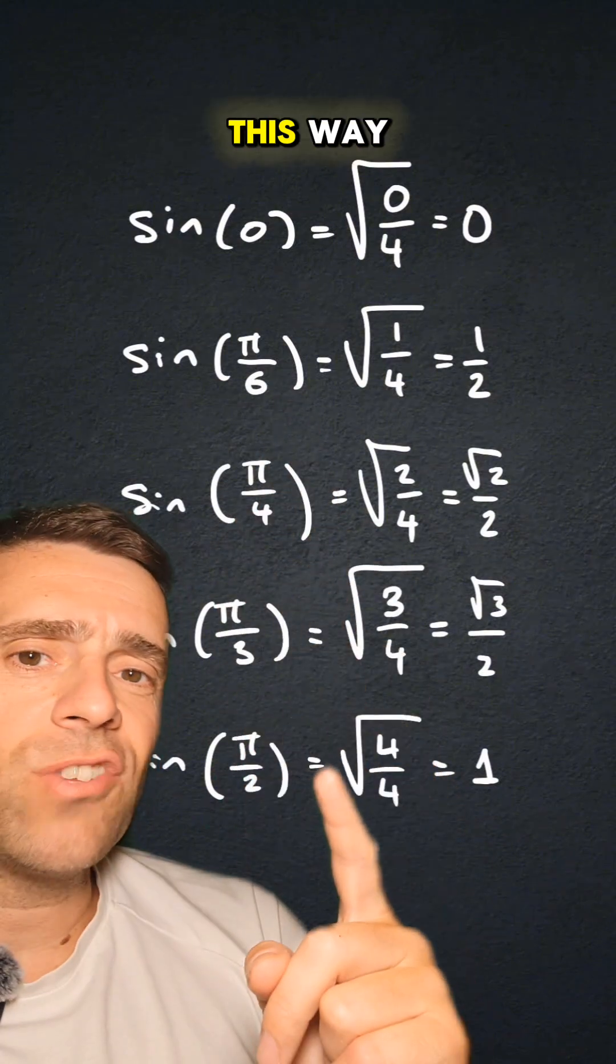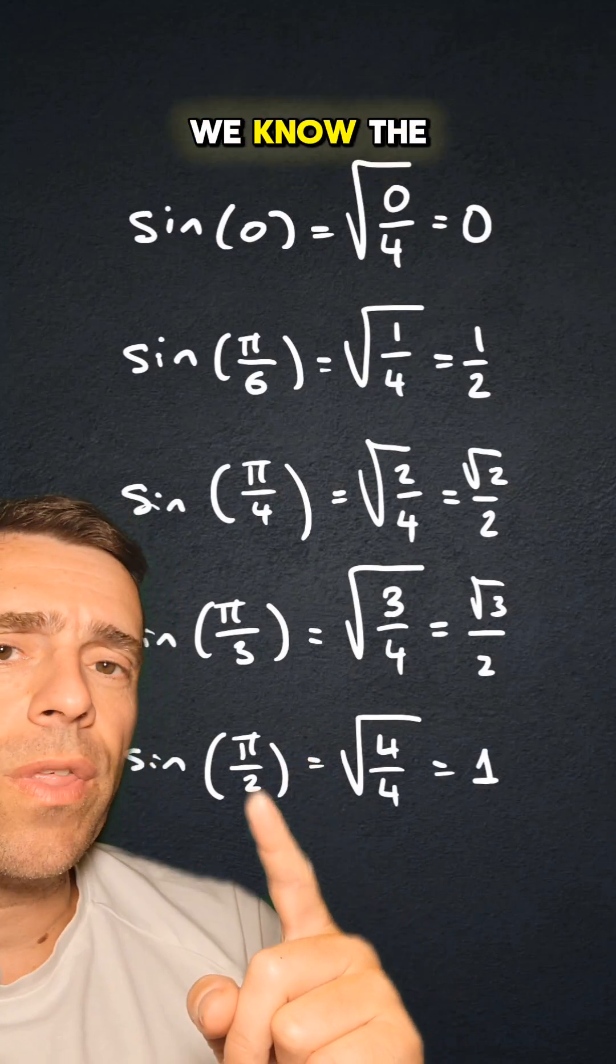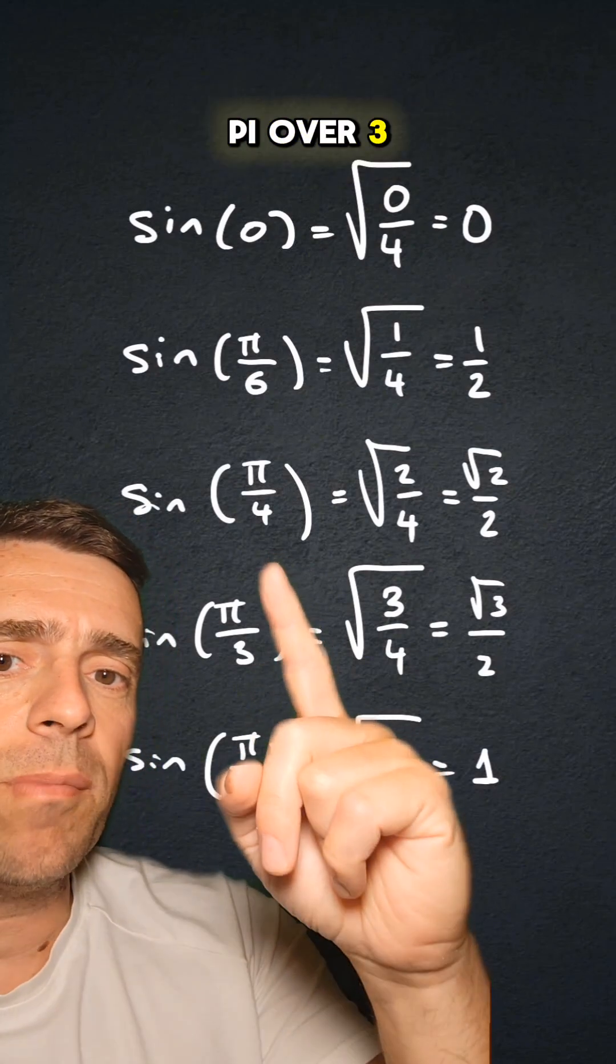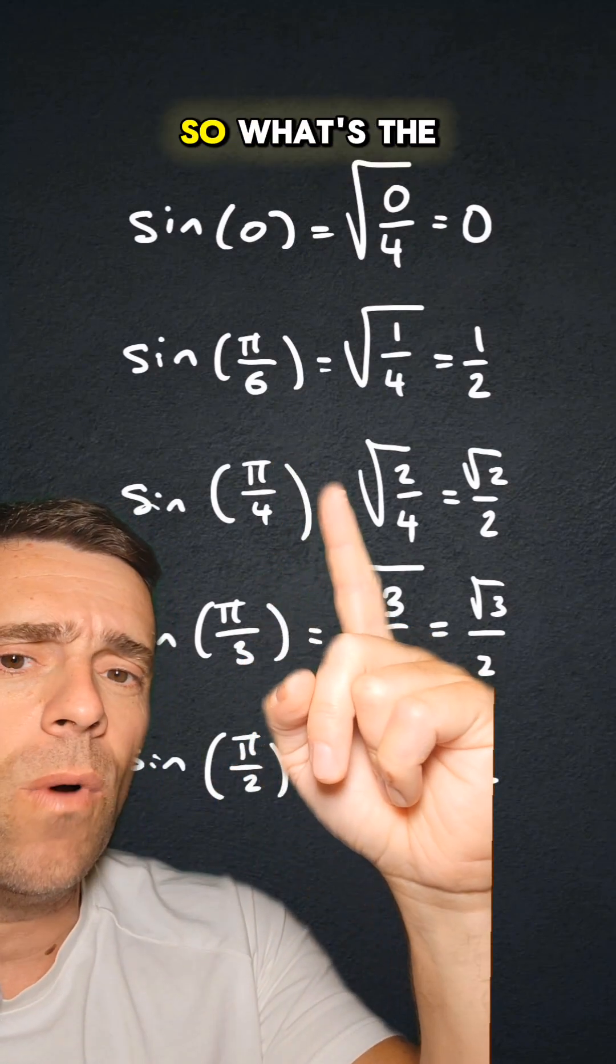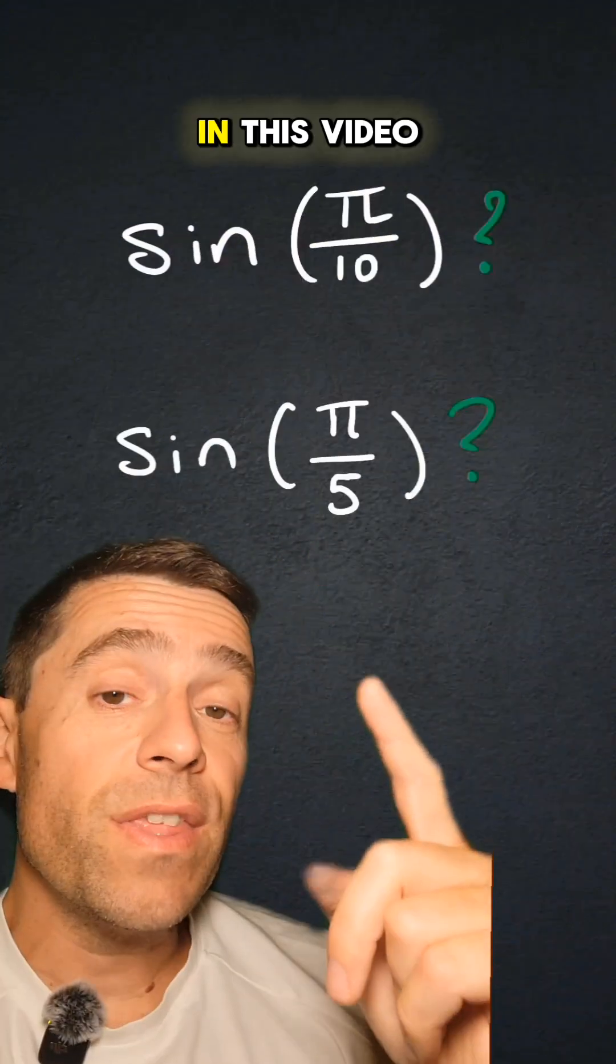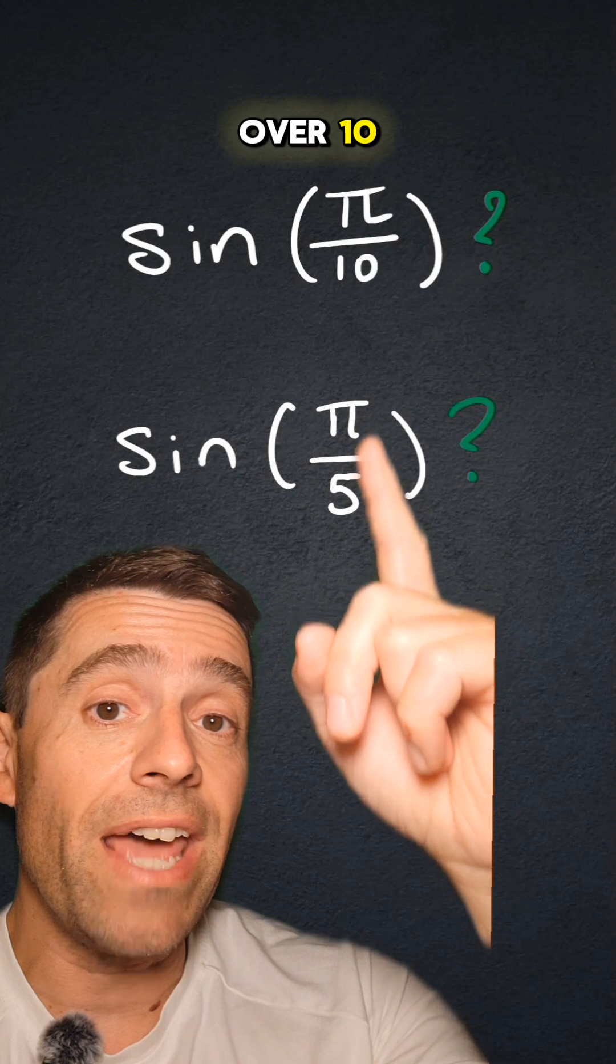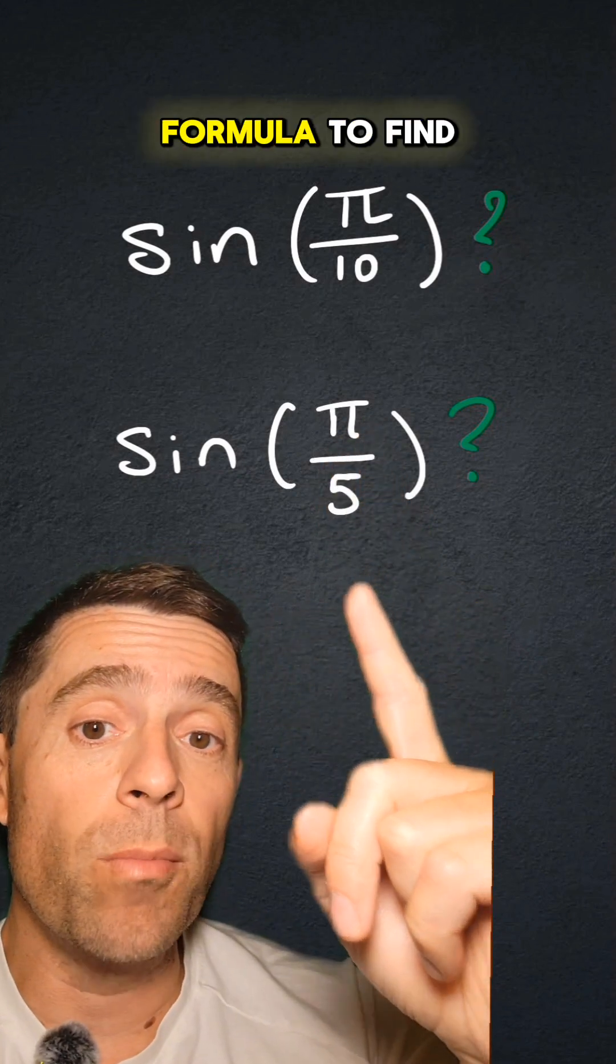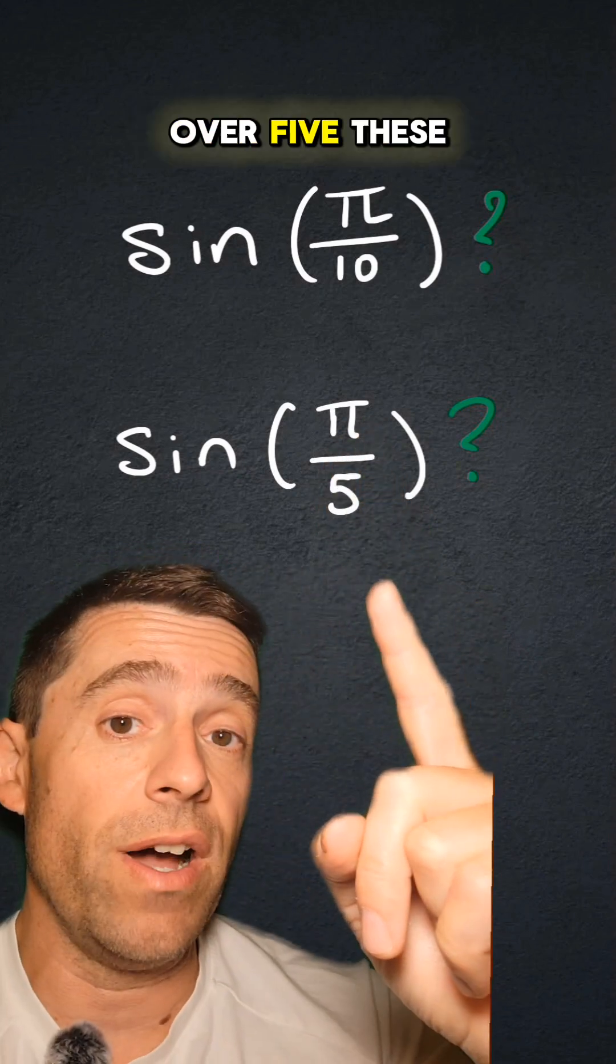But once you put it in this way, there is an immediate question. We know the sine of π/2, π/3, π/4, π/6. So what's the value of sine of π/5? In this video, I'm going to show you how to find the sine of π/10 and then use the double angle formula to find the sine of π/5.